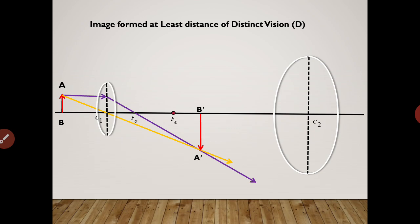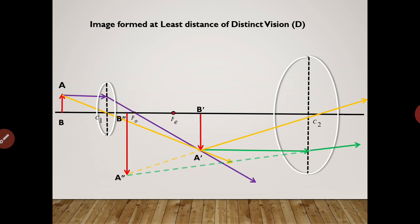As per the principle, the image A'B' lies within the focal length of the eyepiece — it lies between C2 and fe. Under such condition, we draw the ray parallel to the principal axis which after refraction bends; we extend it in the backward direction. The second ray passes through optical center C2 and goes undeviated; this is also extended. The point where the two rays meet gives the final image, marked as A''B''.